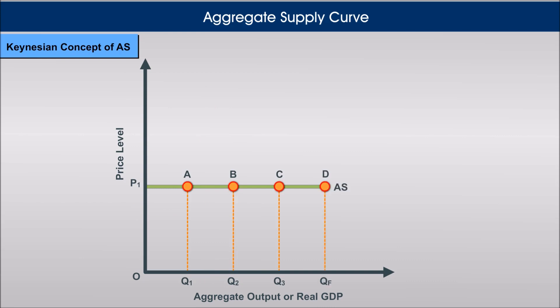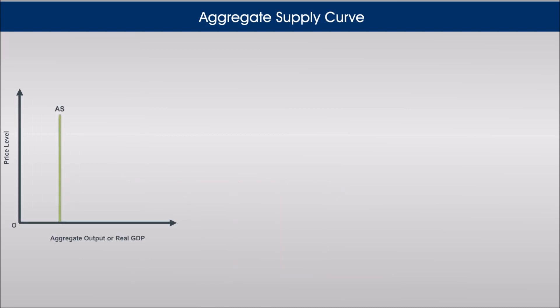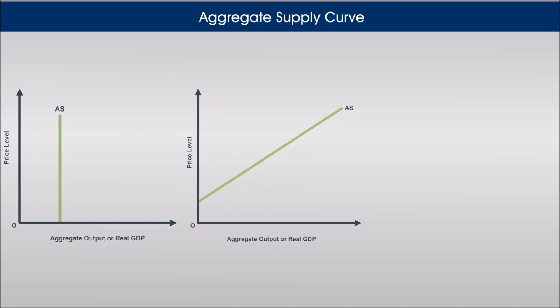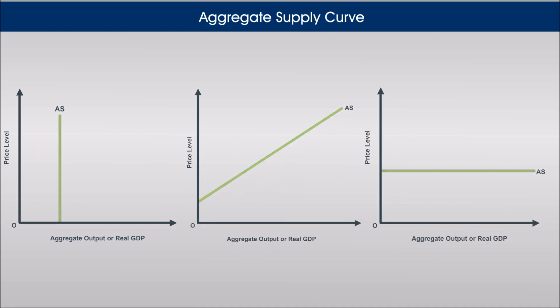In the Keynesian concept, on the other hand, the AS curve is perfectly elastic before reaching the full employment level. It means that all producers are ready to produce any quantity of output given the market prices, due to price and wage rigidity and constant marginal productivity of labor.